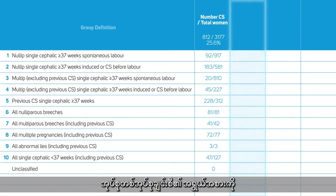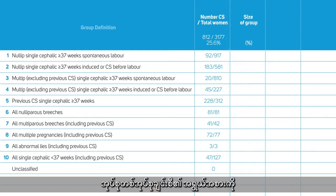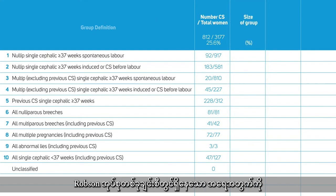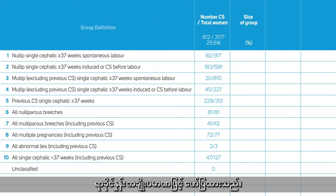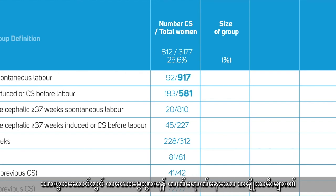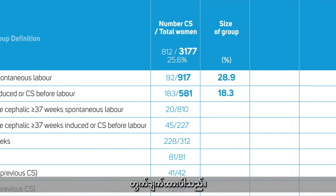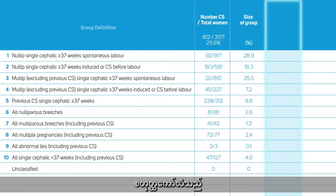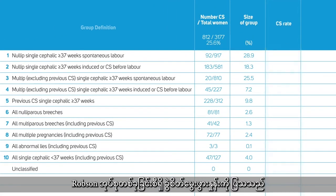The third column shows the size of each group — that is, the proportion of women admitted for birth that falls in each group. The size of each group is calculated by dividing the number of women in each group by the total number of women admitted for birth in your unit.